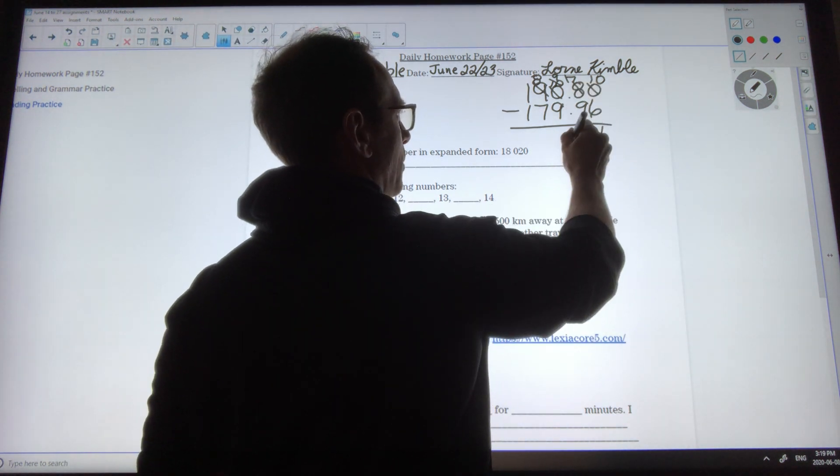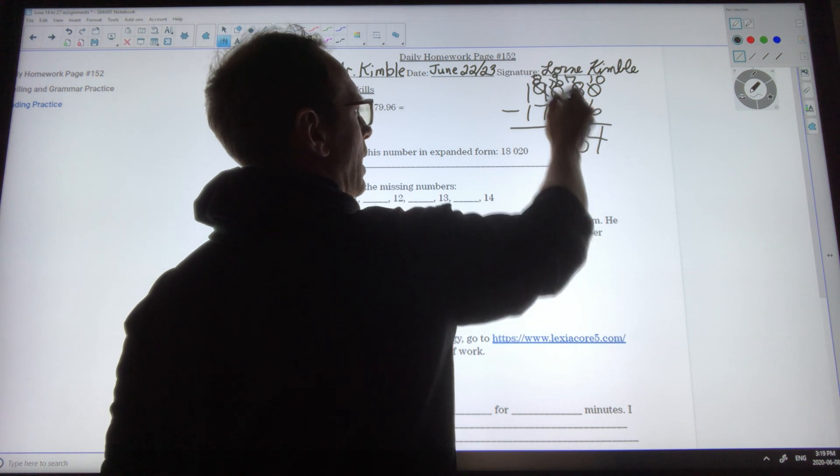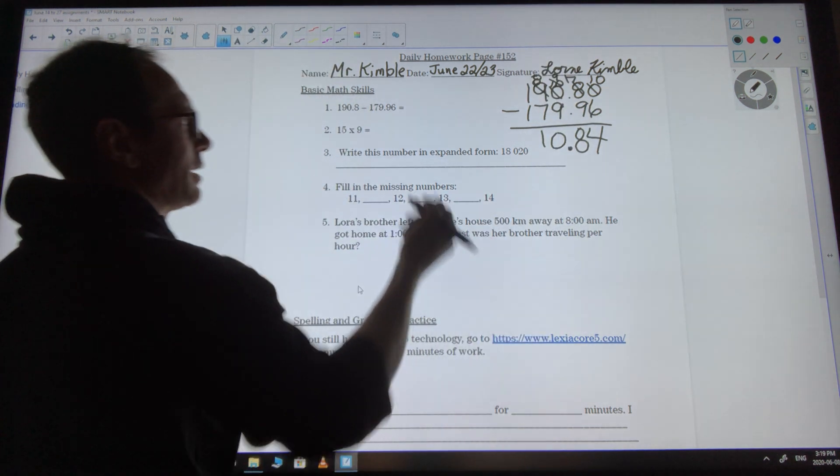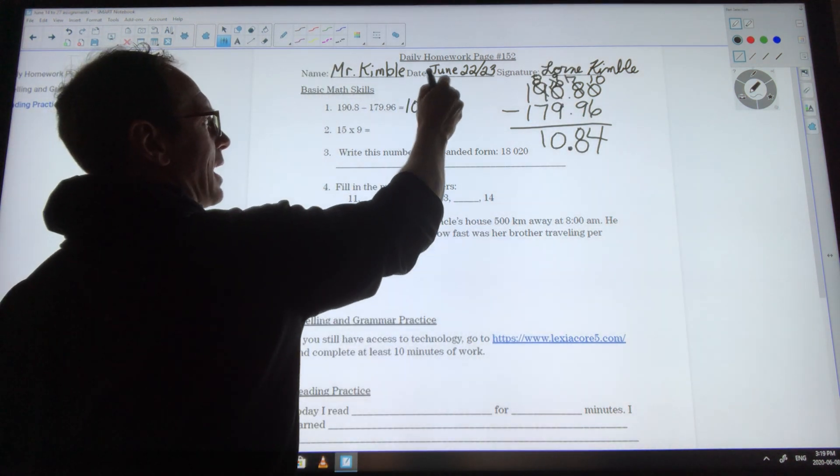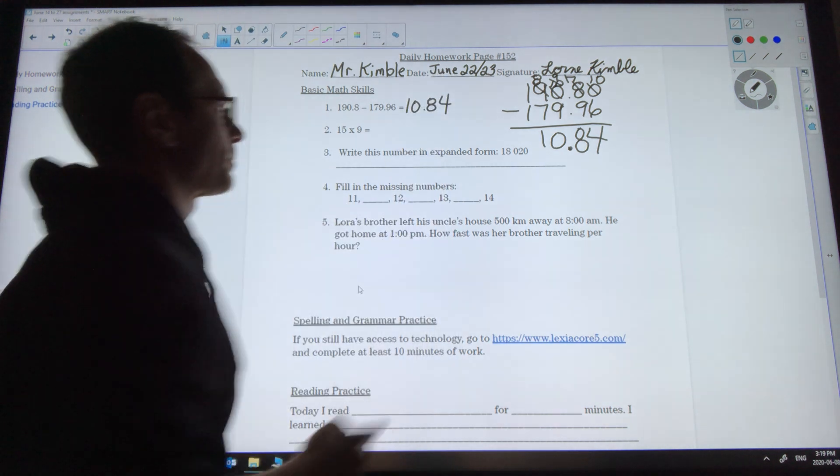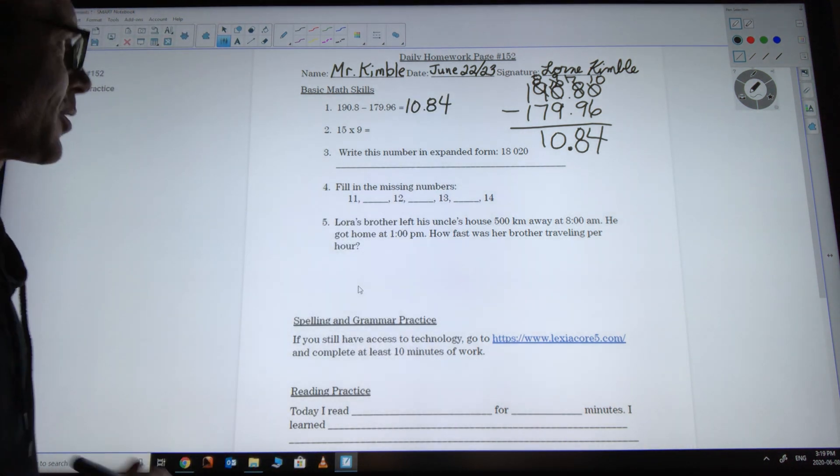I'm going to drop my decimal in where it belongs. 9 minus 9 is 0 and 8 minus 7 is 1, so my answer is 10.84. I estimated 10, not too bad.